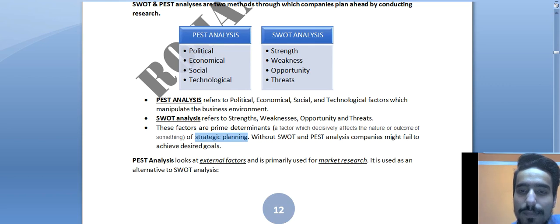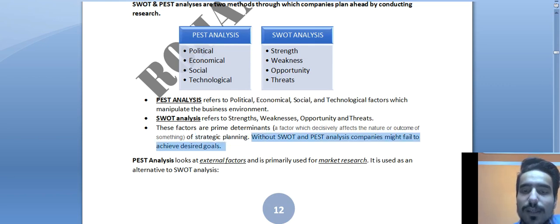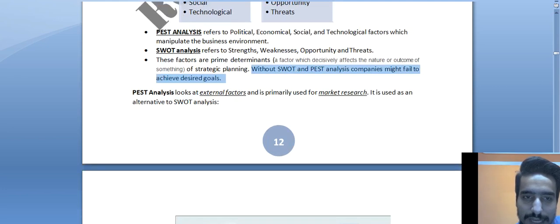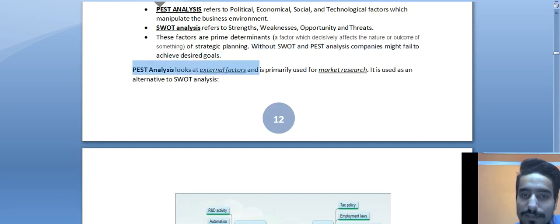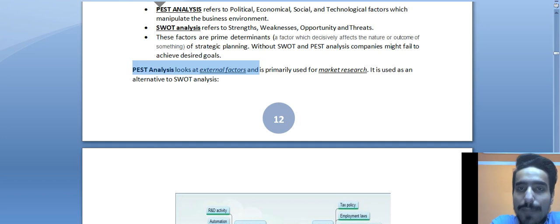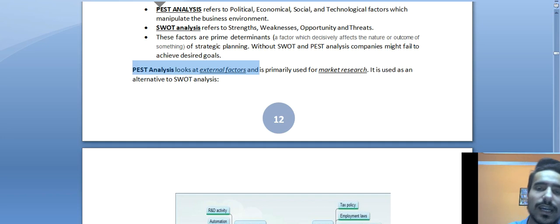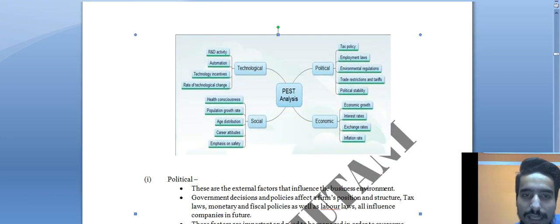Without SWOT and PEST analysis, companies might fail to achieve desired goals. PEST analysis looks at external factors and is primarily used for market research. It is used as an alternative to SWOT analysis.